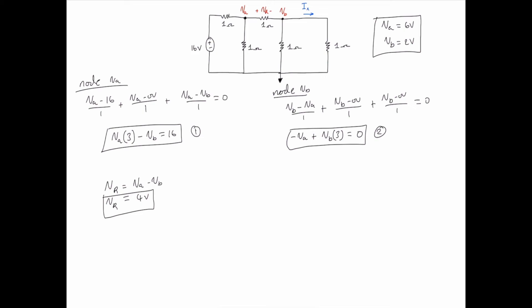Knowing the voltage at VB we solve for IX using Ohm's law. IX equals the voltage at VB divided by the total resistance in that branch which is 1 ohm, so we get 2 amps.